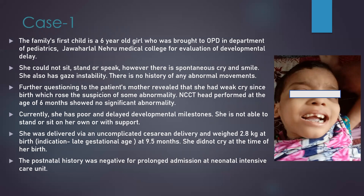According to her mother, she could not sit, stand, or speak. However, there is spontaneous cry and smile. She also has gaze instability. There is no history of any seizure-like movements. Further questioning revealed that she had a weak cry since birth, which raised the suspicion of some abnormality. NCCT head was performed at the age of six months, which came out to be normal. She was delivered by an uncomplicated caesarean at nine months; indication was late gestational age. She did not cry at the time of her birth.